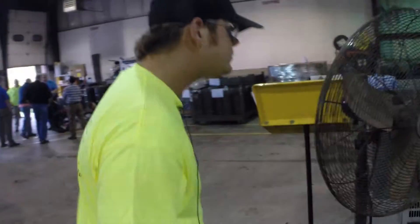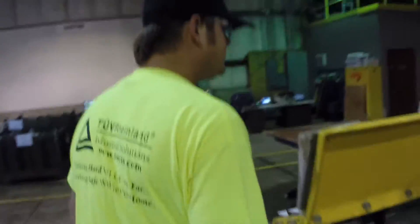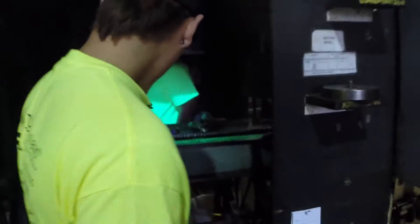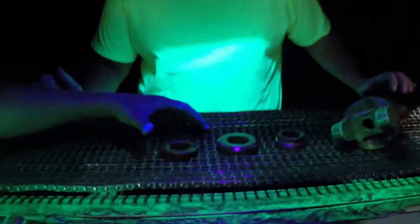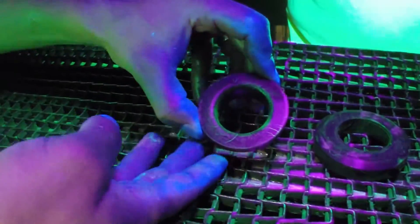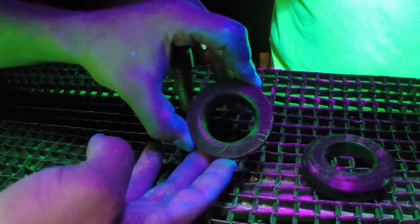You'll follow me around this way into our inspection booth. Here we have some examples of what we would normally find in a blacklight inspection—very tight indications, quench cracks.